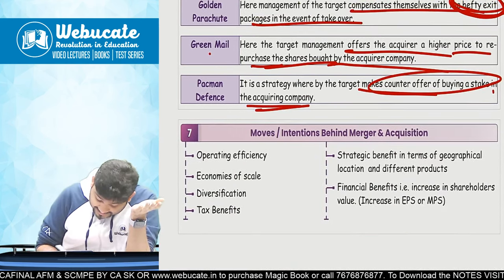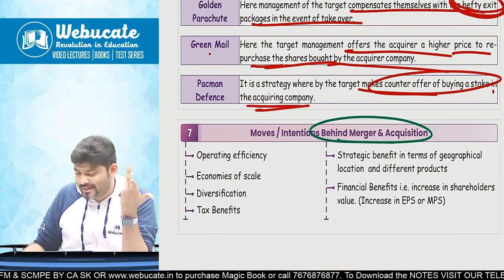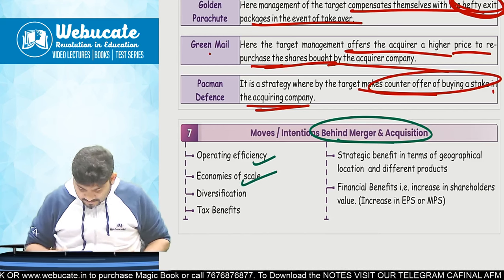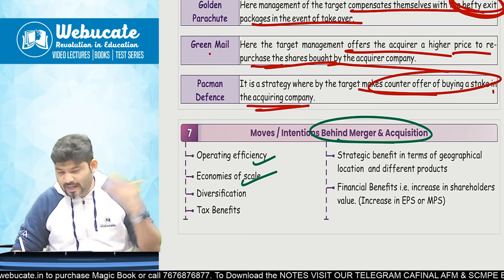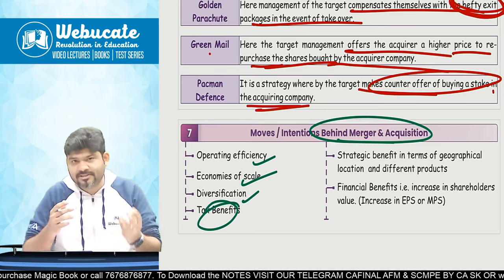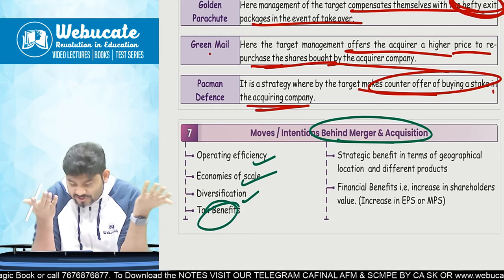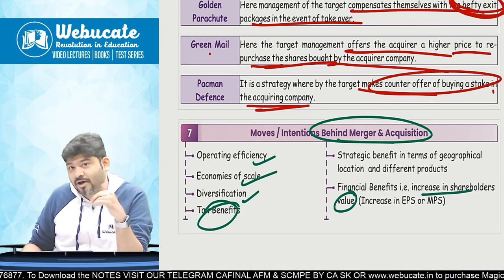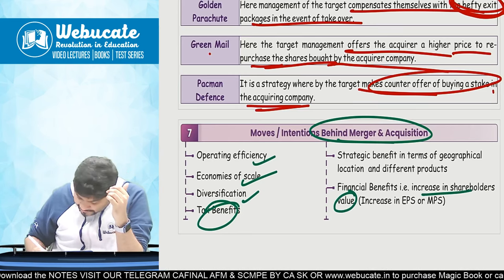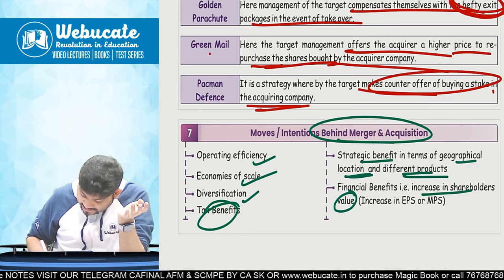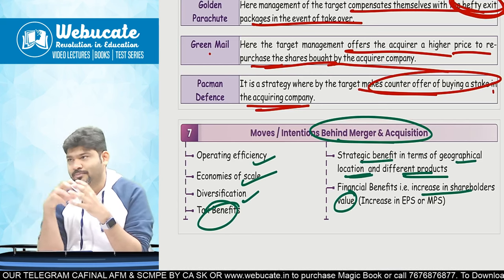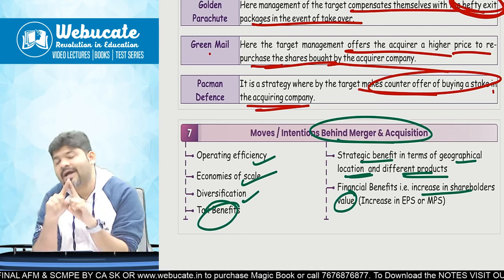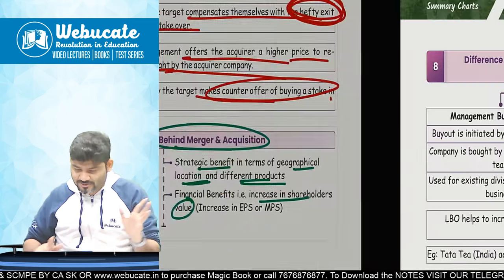What is the intention behind mergers and acquisitions? There could be many: operating efficiency, economies of scale, quick expansion — like Flipkart when it acquired Myntra. Diversification happens; tax benefit happens since amalgamation results in tax benefits. Financial benefit in terms of increase in shareholders' value — EPS and MPS increase post acquisition. Strategic benefit in terms of geographical location and different products. If you are at XYZ location and you merge with a company at ABC location, you by default have both locations.